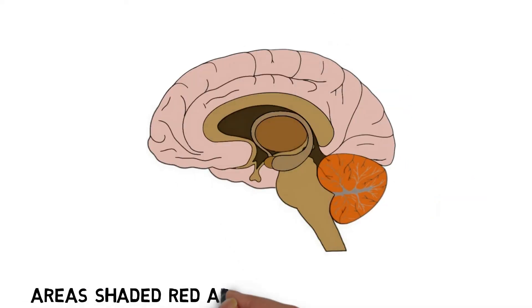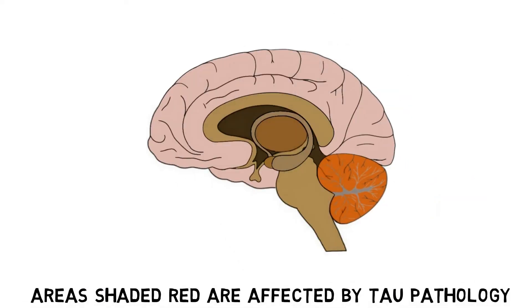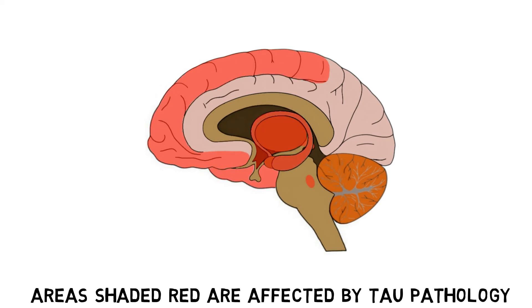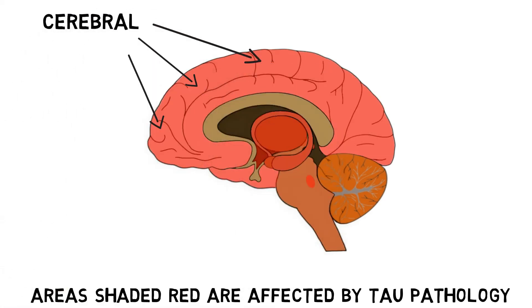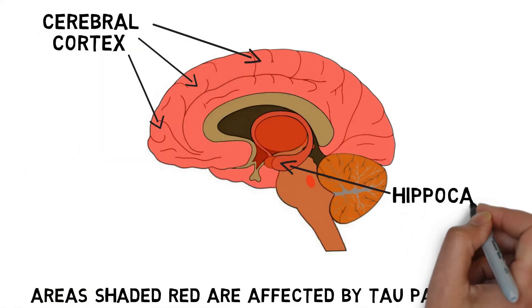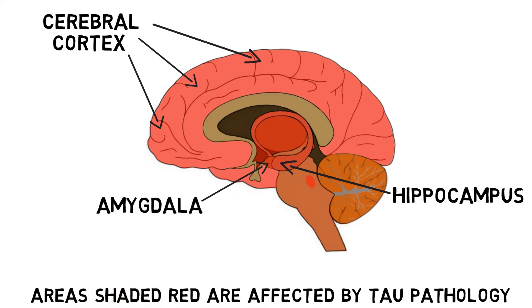Initially, tau aggregates primarily form close to the surface of the cerebral cortex, but as the disease progresses, they spread throughout the cortex and to other areas of the brain like the hippocampus, amygdala, and various other regions.